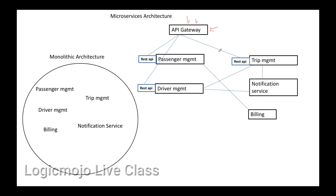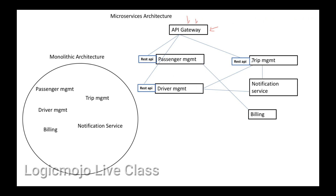One important point: in microservice architecture, different modules communicate with each other using message queues rather than REST APIs, because REST API is synchronous communication but we want asynchronous communication. For that we use message queues, and mostly we use ActiveMQ in microservice architecture. ActiveMQ is used for asynchronous communication and is one model of a JMS messaging queue. We'll now see how ActiveMQ actually works and how it helps communication between different modules.